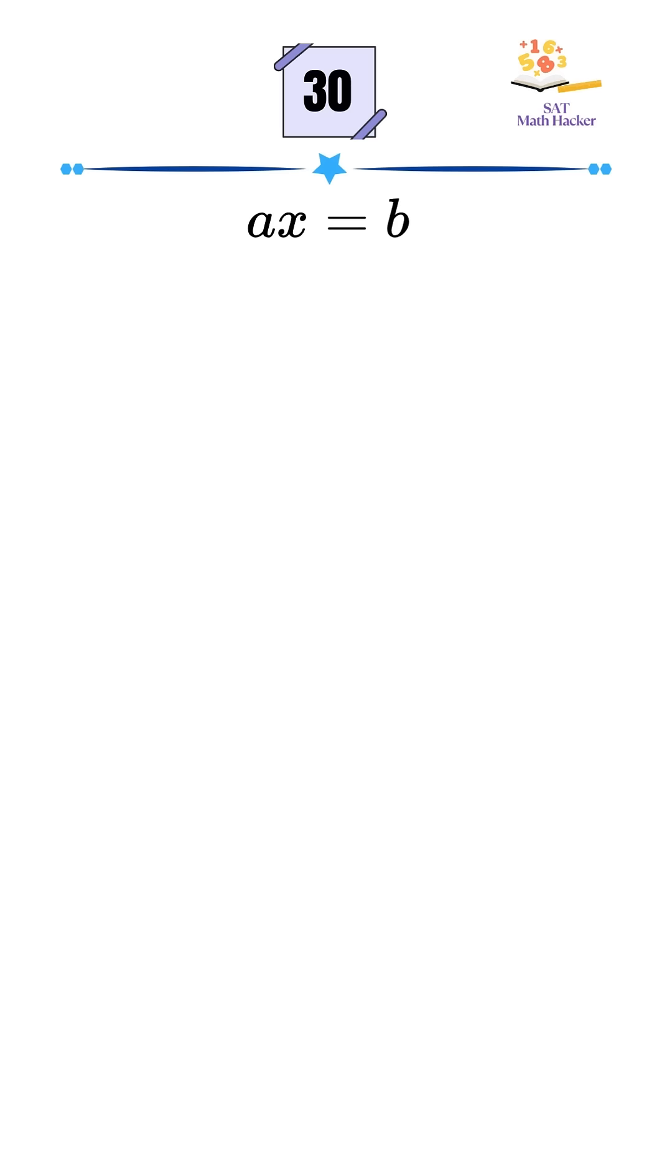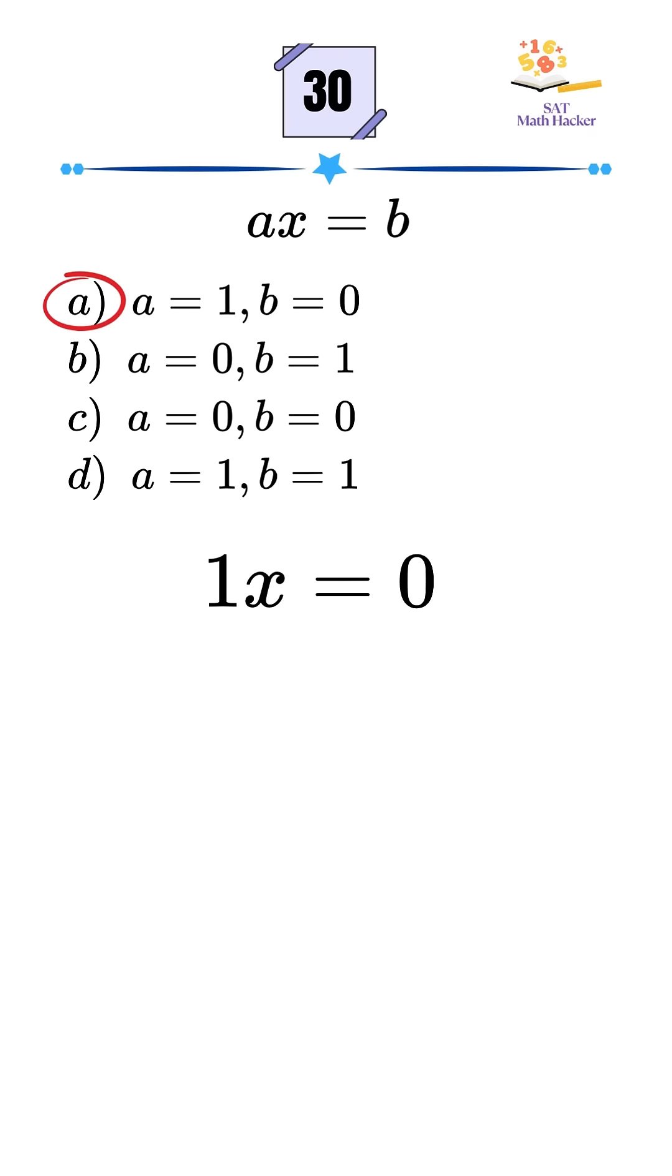Let's test each option one by one. Option A. If A equals 1 and B equals 0, we get 1X equals 0, or X equals 0. That's just one solution, not infinite. Eliminate it.